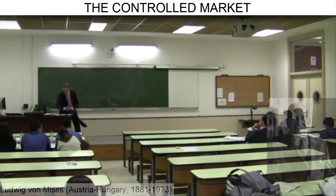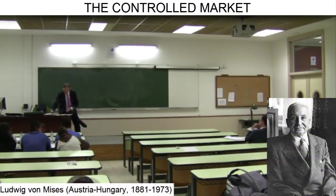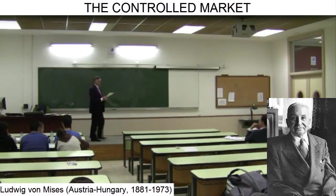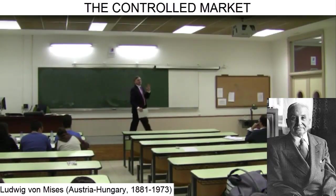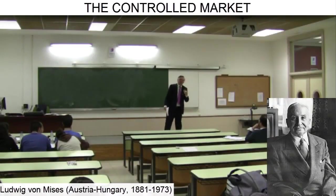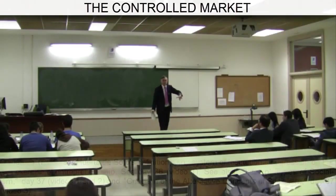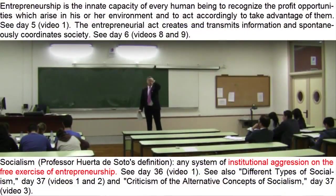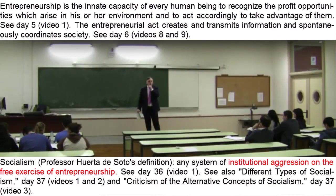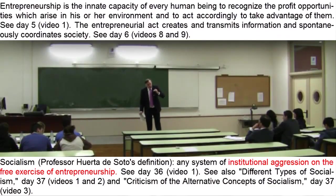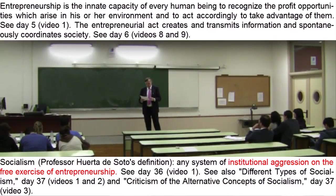In Human Action, Mises begins by examining what interventionism is. As you already know, he stresses the difference between interventionism and socialism. But from my point of view, they are simply two similar manifestations in society, though they differ in degree of impact and severity.